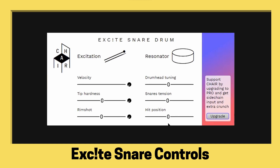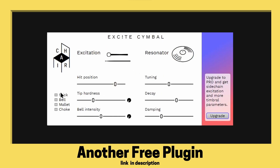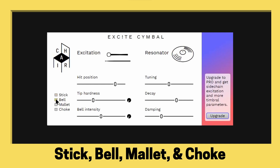Let's check out another plug-in by CHAIR called EXC!TE Cymbal. This one simulates several different kinds of hits: a stick hitting the bell of the cymbal, hitting the cymbal with a mallet, and then choking the cymbal off. I'll hit mallet and then choke in quick succession.